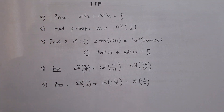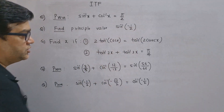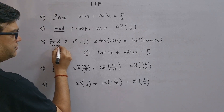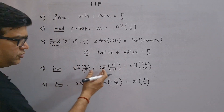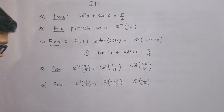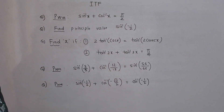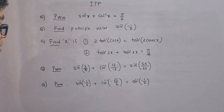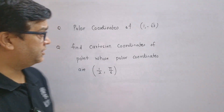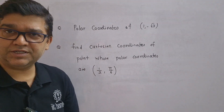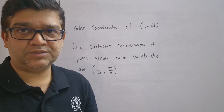Problems on ITF (inverse trigonometric functions) are also very important. They might ask you to prove that sin⁻¹x + cos⁻¹x = π/2, or find the principal value of sin⁻¹(−1/2). Also important: find the value of x if some ITF equations are given; prove that sin⁻¹(3/5) + cos⁻¹(−12/13) = sin⁻¹(56/65); prove sin⁻¹(−1/2) + cos⁻¹(−√3/2) = cos⁻¹(−1/2). Also: converting between Cartesian and polar coordinates.